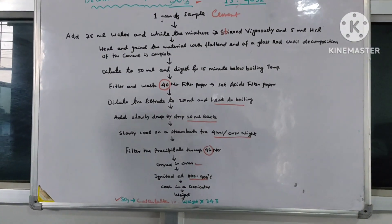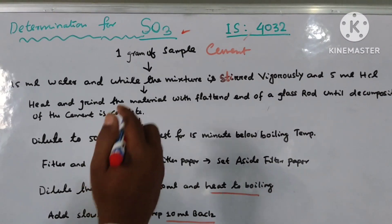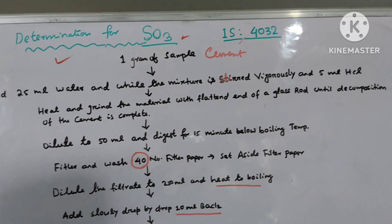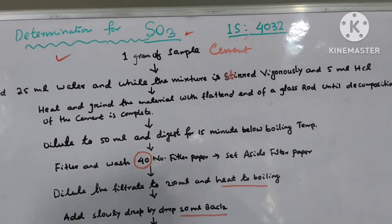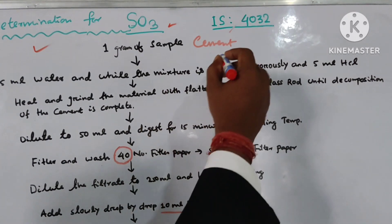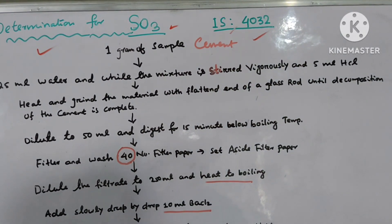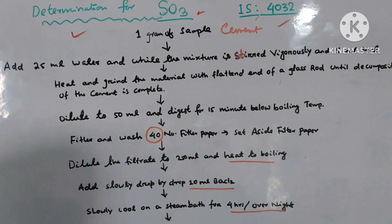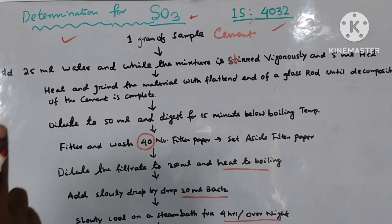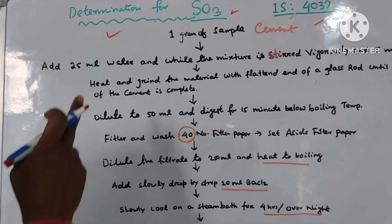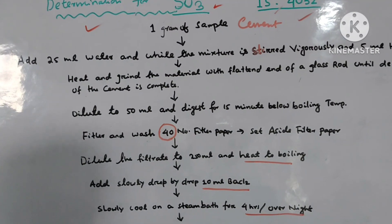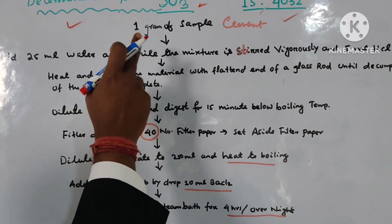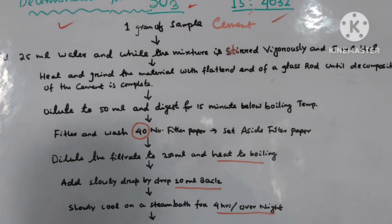Sulfur trioxide — SO₃. The standard protocol for testing is IS 4032. The standard IS 4032 declares all the testing methods. I will explain step by step how to test the sulfur trioxide.